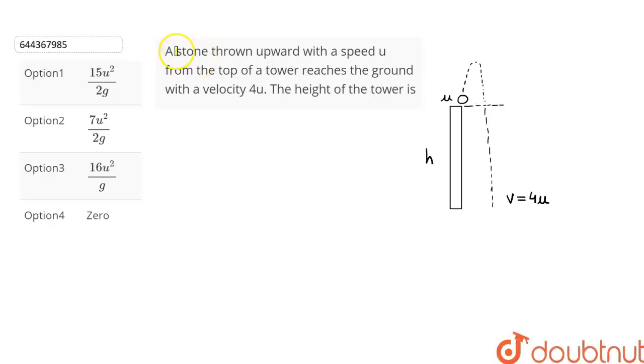The question is: a stone is thrown upwards with a speed u from the top of a tower. It reaches the ground with a velocity of 4u, and we have to calculate the height of the tower. We are given four options from which we have to choose the correct option.